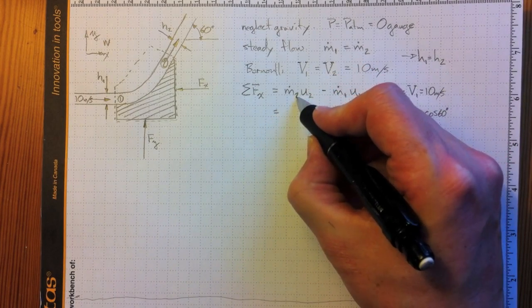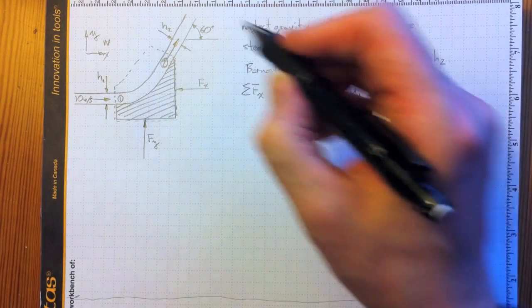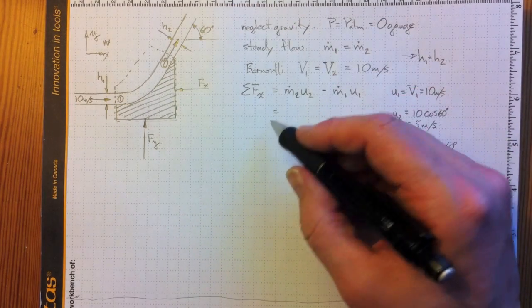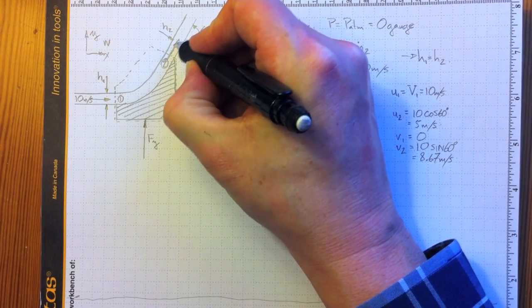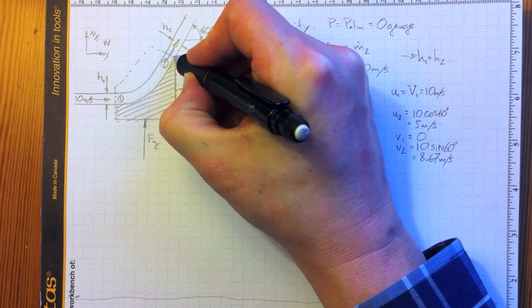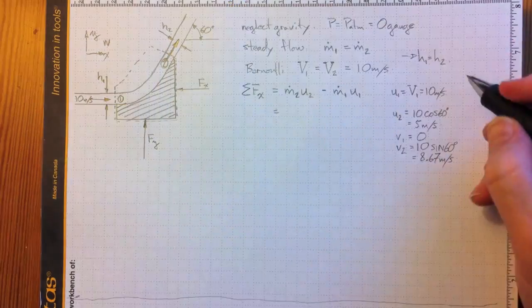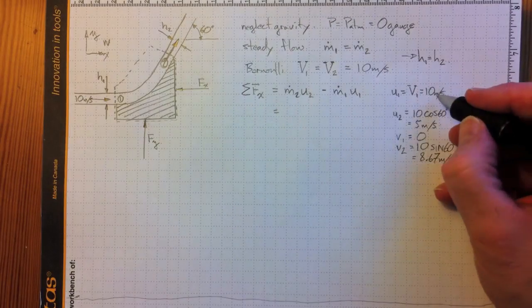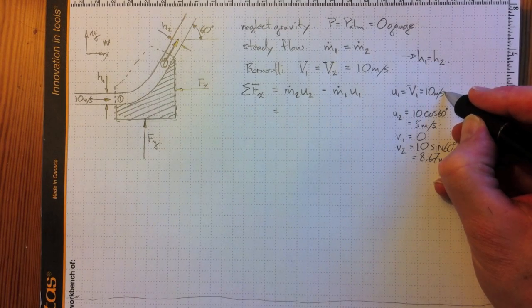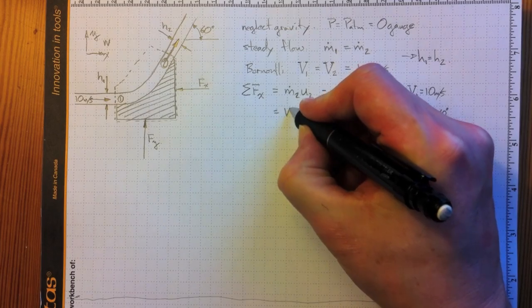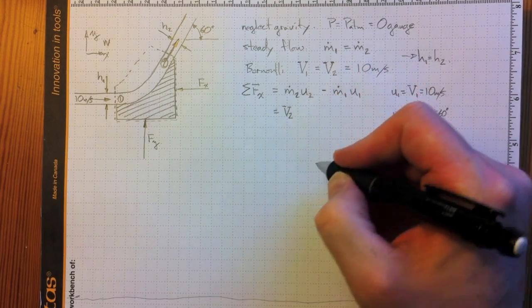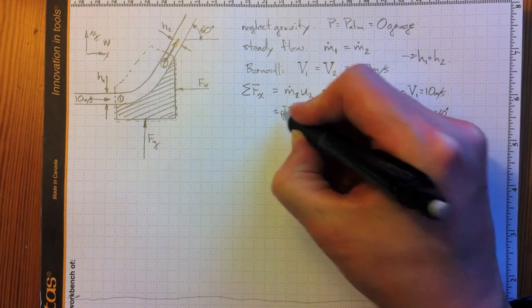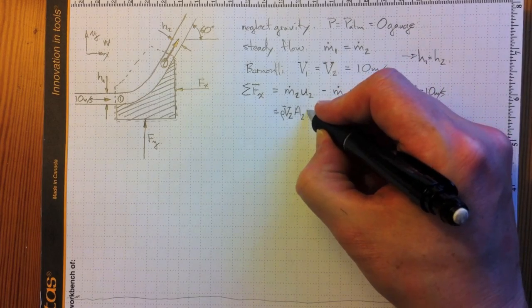So, m.2, need to be careful that we use the right value here. I'd be tempted to use u2 times a2, but that would give me the wrong answer, because the velocity that determines the mass flow across this area is the perpendicular velocity. That's either u2 squared plus v2 squared, all square root, to get the magnitude, or, looking at this, I know it's 10 meters per second. So, v2, the total velocity, times a2, the area, times the density, times u2. Minus rho, v1, a1, times u1.